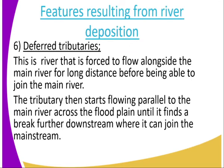We get to the deferred tributaries. This is a river that is forced to flow alongside the main river for a long distance before being able to join the main river. The tributary then starts flowing parallel to the main river across the flood plain until it finds a break further downstream where it can join the main stream. That is the reason why it is referred to as a deferred tributary.